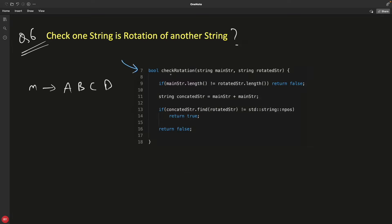So as usual, we have this our code. This is the function like check rotation. We have main string and then rotated string. So main string is like this. See, I told you, right? We have to check if main string dot length is not equal to rotated string dot length, then just simply return false. So this returns boolean.